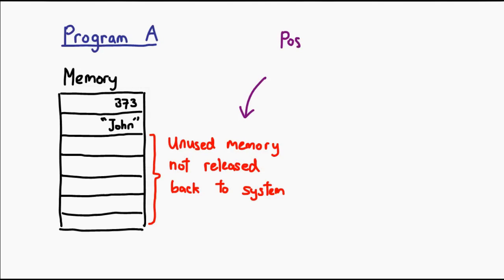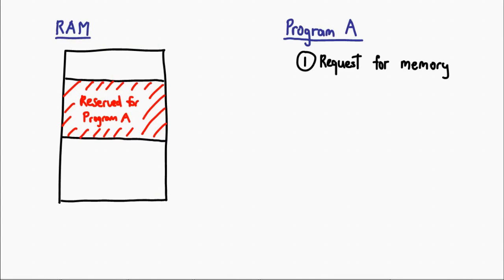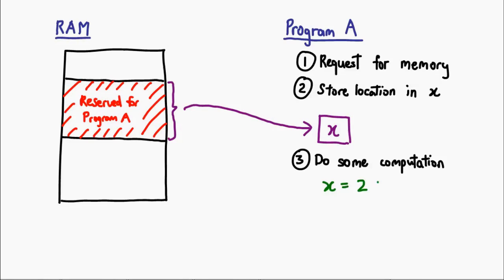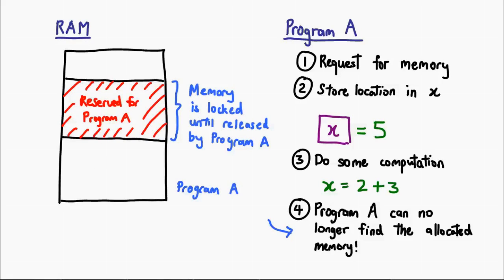Let's say a program has requested for a chunk of memory, and has a variable x which serves to point to the location of this memory. Perhaps somewhere along the line in the computation, the program accidentally overrides the value of x. What this means is that memory is still allocated, but in the future when you go to x, it no longer points to it. As a result, you cannot even say you want to return that particular bit of memory, because you don't have any information to tell you where that memory is. This is a memory leak at its finest, because it is really lost in a way that is difficult to recover.